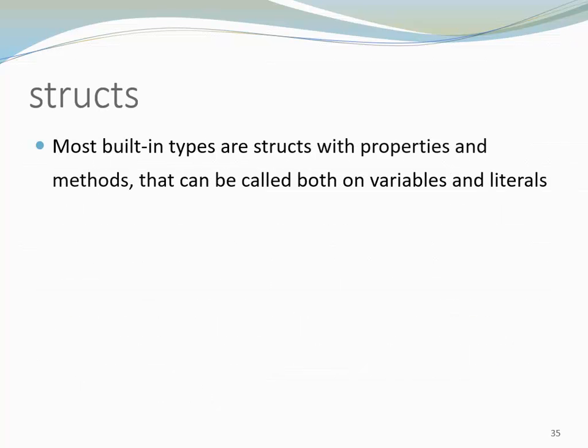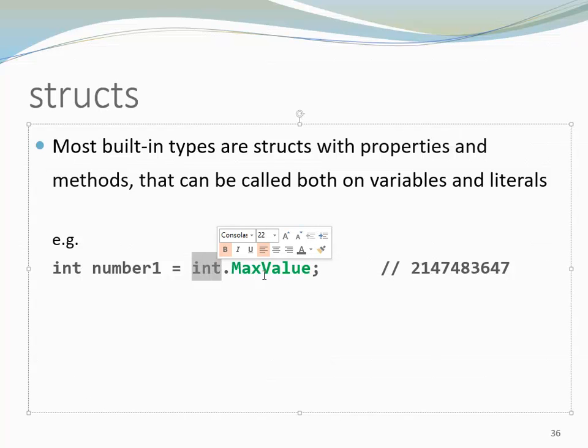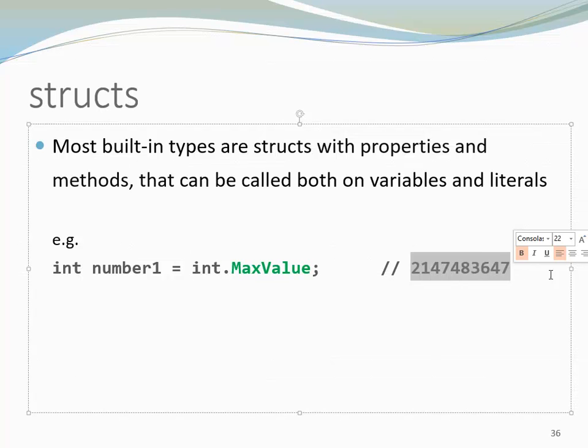Most built-in types are structs with properties and methods that can be called both on variables and literals. So here is an example of integer. Int is a struct and here we are calling a property on the type directly because max value happens to be a static property. The max value of integer gives me the largest integer value which happens to be slightly larger than 2 billion.